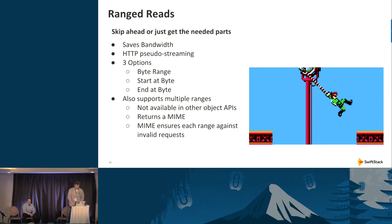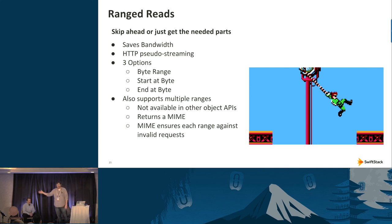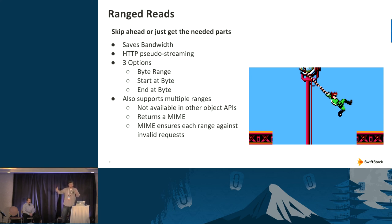Range reads are another HTTP-ism that's made its way into the Swift API. You don't have to download an entire object — just a portion. Many HTTP tools already use these. One of the biggest use cases is HTTP pseudo-streaming: upload a video into Swift, make it public with a temp URL or public container ACL, point an HTML5 browser at it, and you can skip into the middle of the video and resume playing. The browser uses range requests — byte range offsets — to seek into the middle of a video and start playing from there.